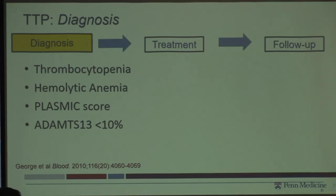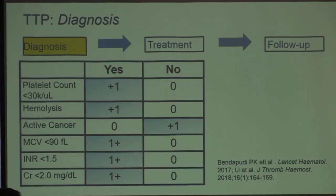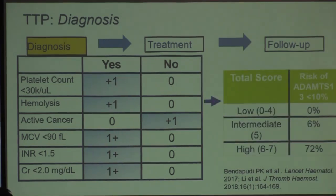Diagnosis really starts with recognition — getting the word out about what the symptoms can look like. We look at platelet counts and red blood cells. One advance in TTP diagnosis has been using something called the PLASMIC score, which was developed to make it easier to recognize TTP because sometimes lab testing isn't back right away. This score has been validated to help clinicians who may not have the ADAMTS13 test back yet determine who needs treatment immediately.